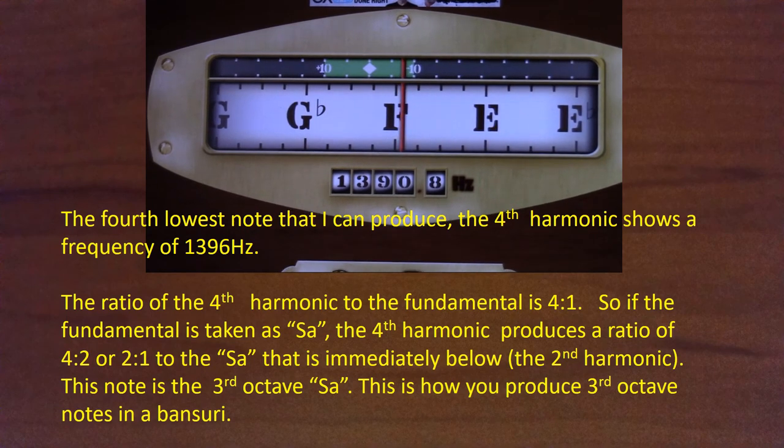You'll see that the fourth harmonic shows a frequency of around 1396 hertz. The ratio of the fourth harmonic to the fundamental is four to one. So if the fundamental is taken as Sa, the fourth harmonic produces a ratio of four to two, or two to one, to the Sa that is immediately below — the second harmonic. This note is the third octave Sa. That is how you produce the third octave notes in a Bansuri.